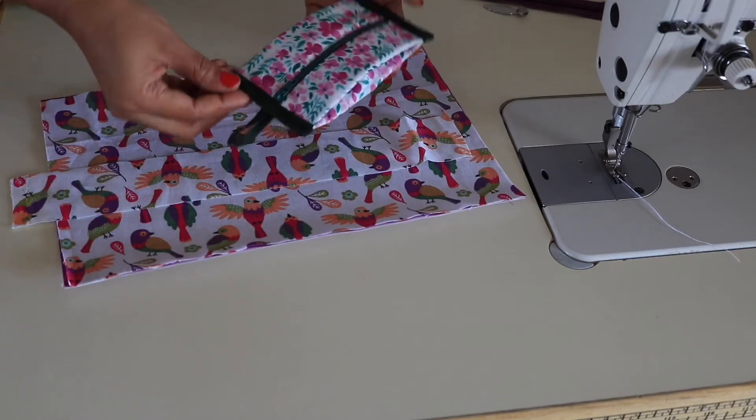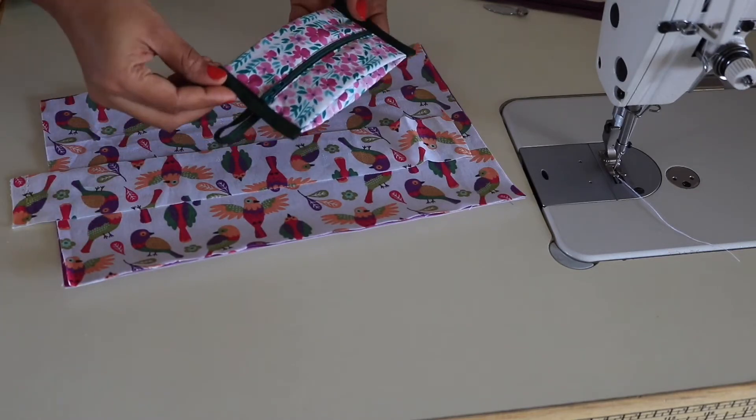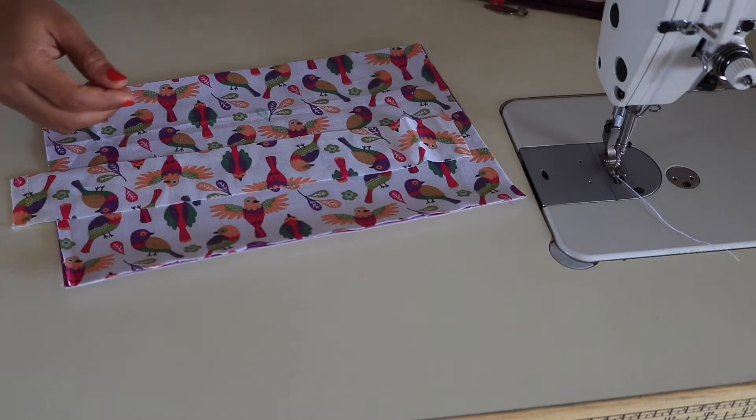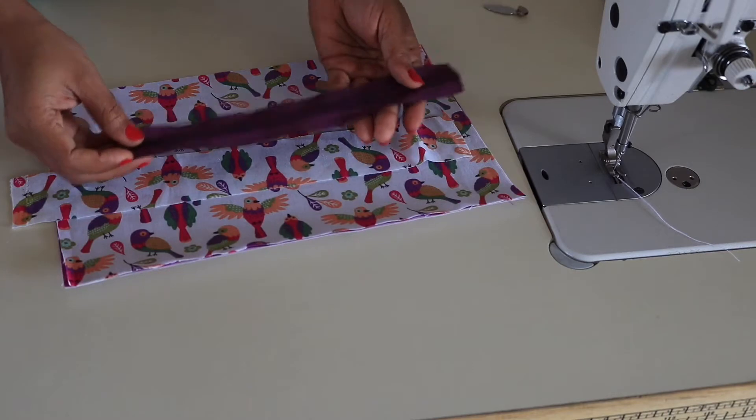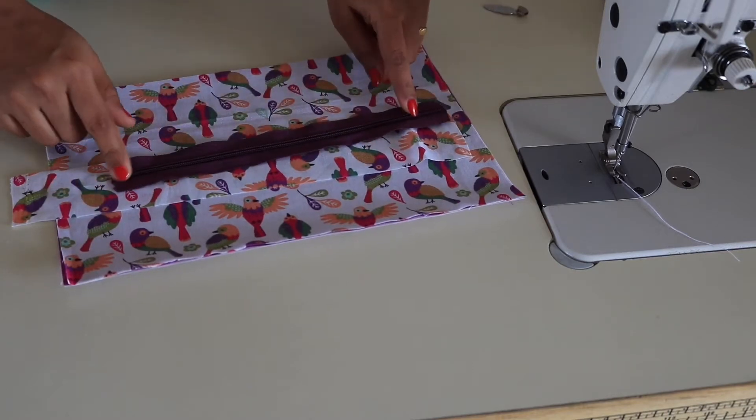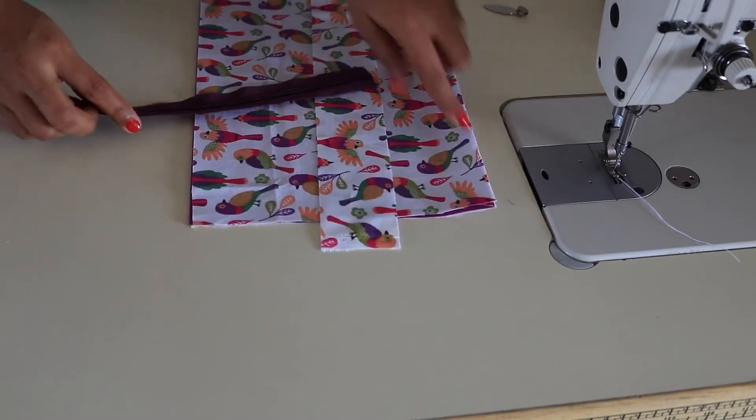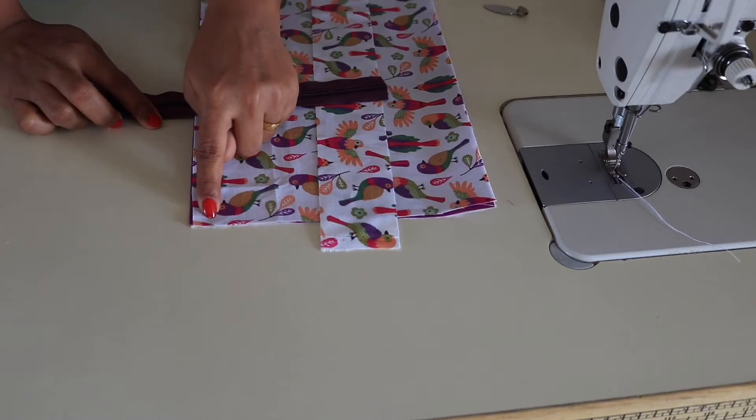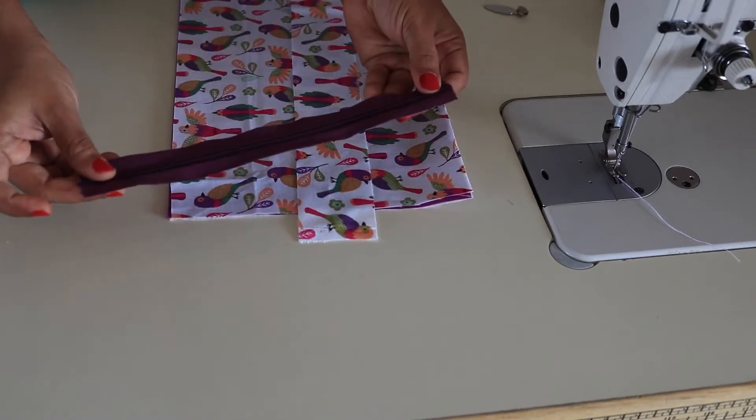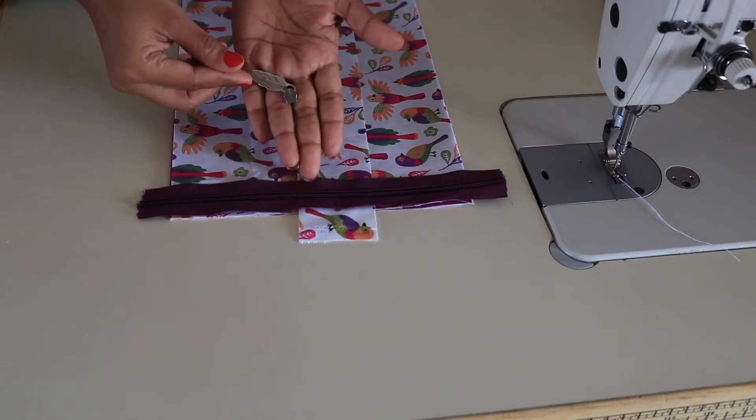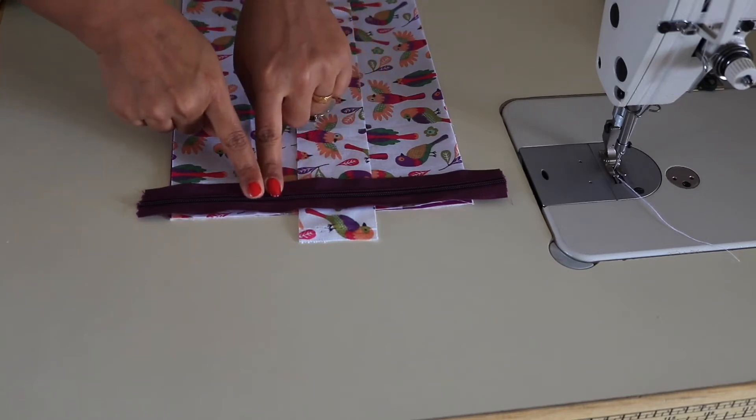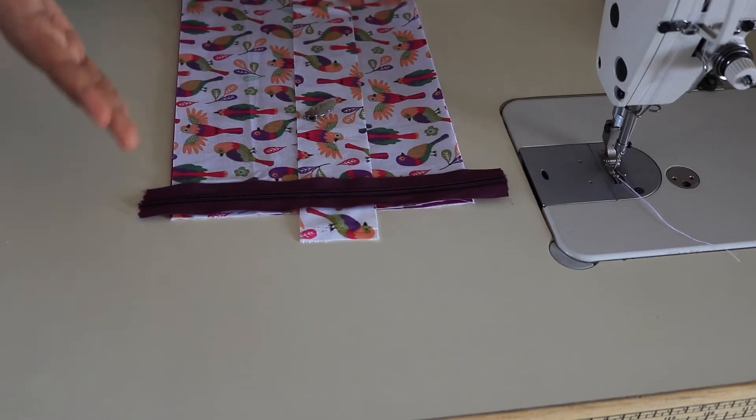You can use the same as the outer panel or you can use any different color or solid. Then we are going to need a zipper. You can use a regular zipper. Here I am using zipper by the yard. We are going to need an 8-inch long zipper, but I have taken 10 inches. Then you are going to need one zipper pull. This is a five number zipper. So let's start.